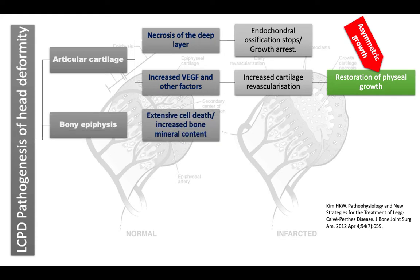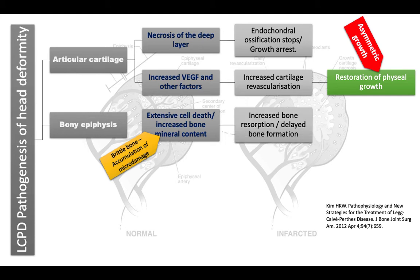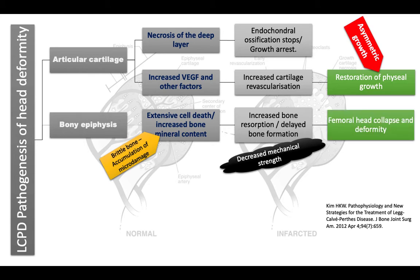Regarding the bony epiphysis: there will be extensive cell death and increased bone mineral content due to collapsed trabeculae, dystrophic calcification, and calcium deposition on dead trabeculae. This causes brittle bone, similar to osteopetrosis. This brittle bone is structurally weak, with accumulation of microdamage. In the revascularization stage, increased bone resorption and delayed bone formation cause structural weakness and decreased mechanical strength of the bony epiphysis, with the ultimate result being femoral head collapse and deformity.